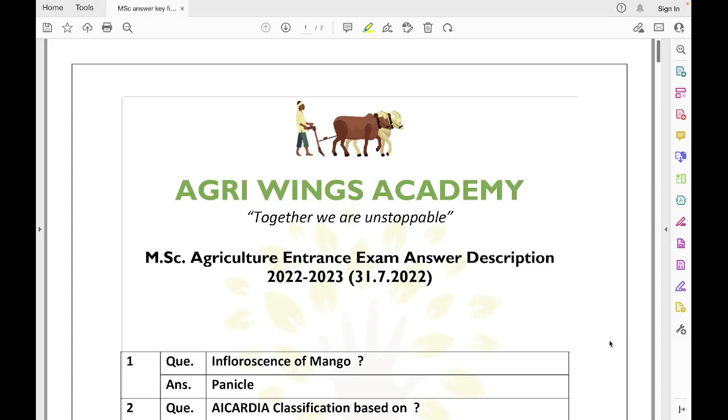Feedback is that the paper was not as typical as previous years. Specially genetics, economics and extension were quite hard. And others like pathology, agronomy, horticulture, soil, nematology and entomology were comparatively easy.